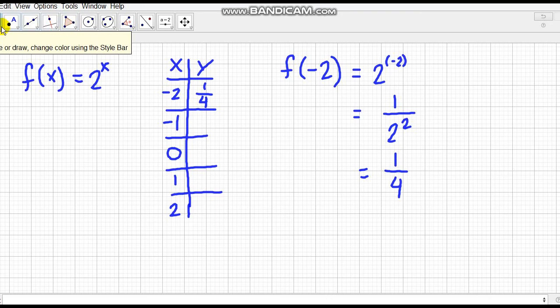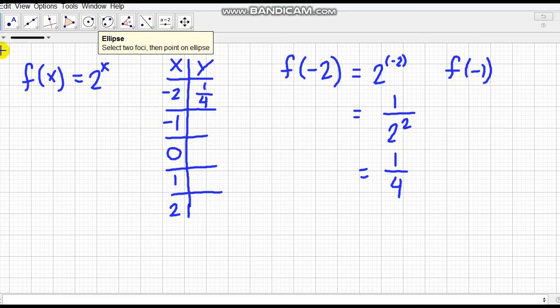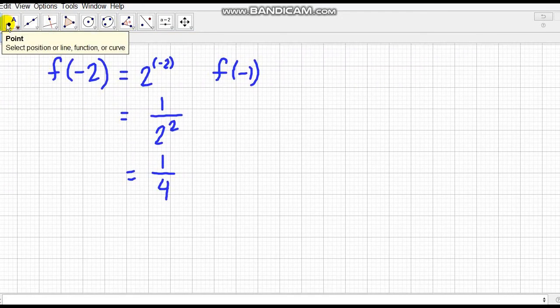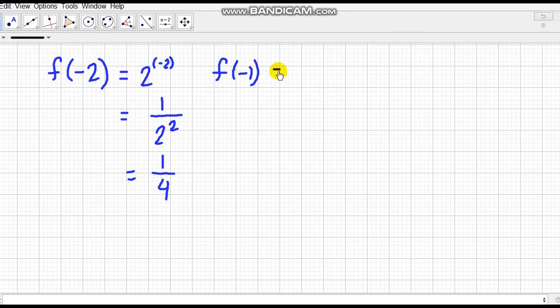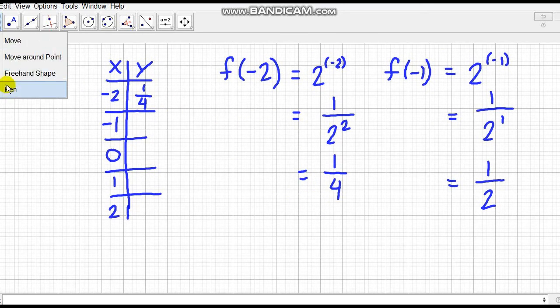So let's go to f(-1). In f(-1), this becomes 2^(-1). And again, if the exponent is negative, we get the reciprocal. So 2^(-1) is 1 over 2^1. And 2^1 is the number itself, which is 2. So the answer is 1/2.